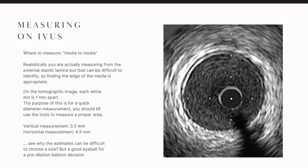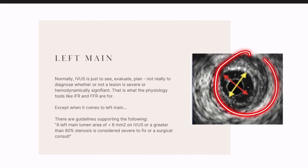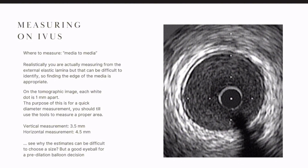In order to measure on IVUS, you need to understand what the layers are because where you're measuring is important. The way you measure is media to media — realistically the external elastic lamina, but you're not always going to be able to differentiate that. When first starting, I teach you to use the outside of the media or on the media itself. Just make sure you're not accidentally measuring the intima, because if the intima is here and the media is out here, that is a very big difference in measurement. Always look for that black line — that's what you measure against.